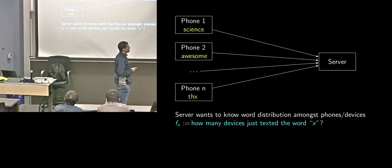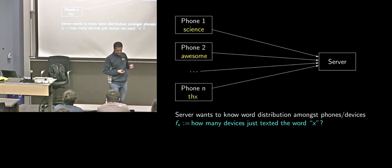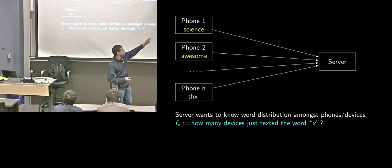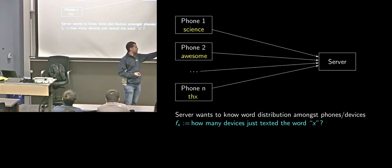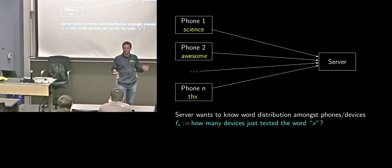Here's the setup. There's a server — the person making the texting app or device manufacturer — and then a bunch of devices. Let's make it simple: I'm just paying attention to the last word you texted your friend. Each device has the last word it texted. The server wants to know word popularities — a histogram F, where F sub X is how many devices are holding the word X.